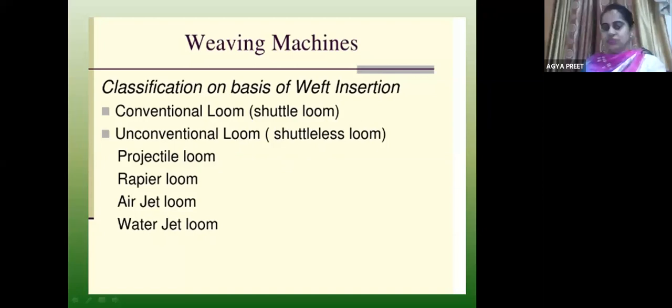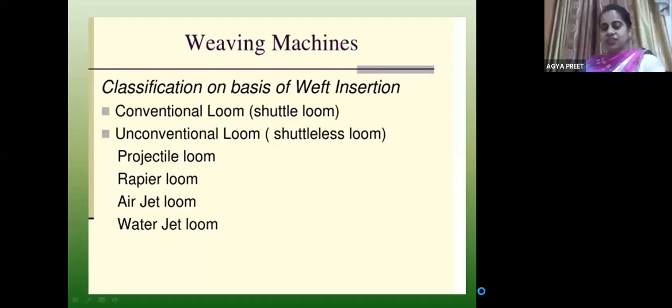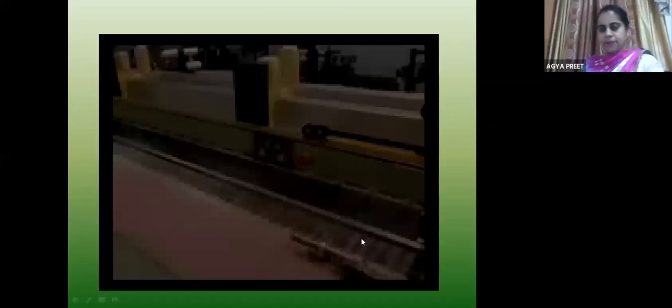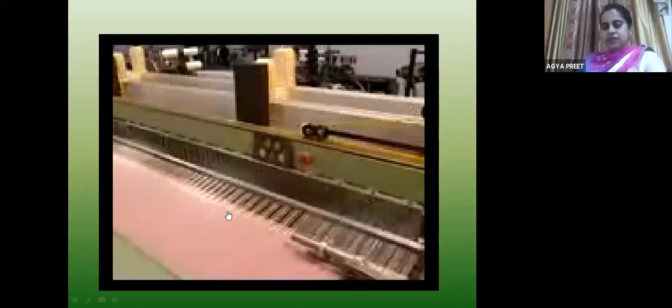Why do we need these shuttleless looms? Because the shuttle was made of wooden material and was heavy. The weft yarn was in the form of a pirn, and the pirn change mechanism meant it had to change the pirn every time — it was time consuming. Hence technology shifted to using these types of shuttleless looms. You can see the video showing actual processing of the loom.